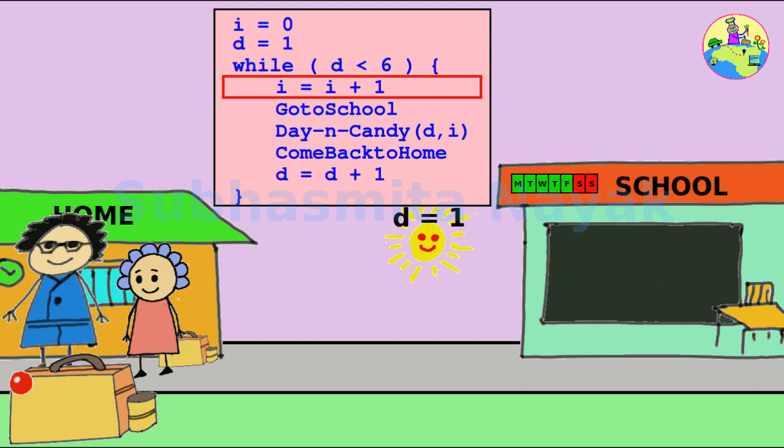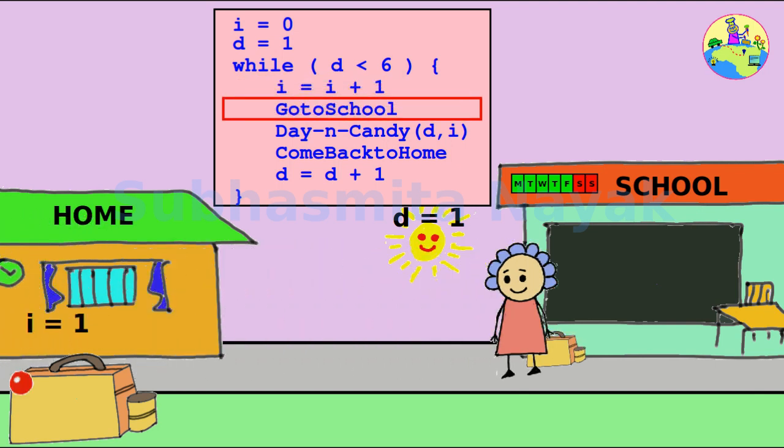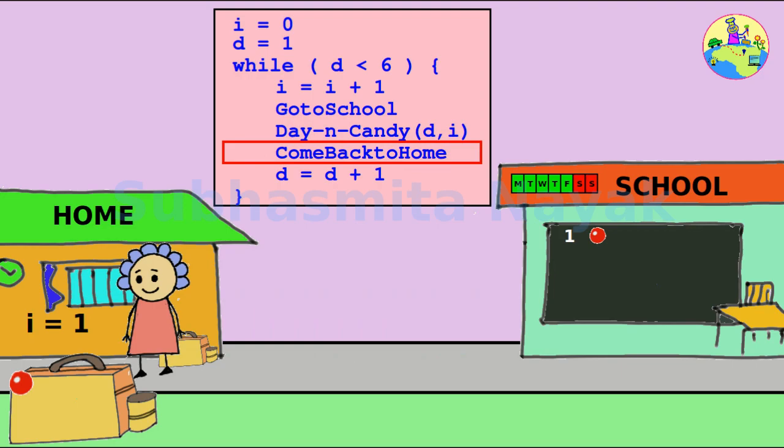So we will enter the while loop. Father gives a candy, then Twinkle went to school and wrote 1 and drew 1 candy in the blackboard and came back to home.